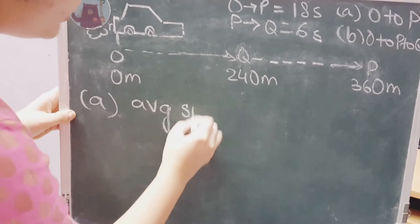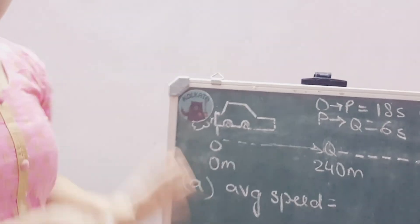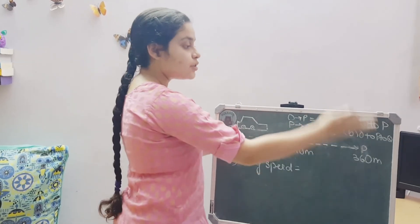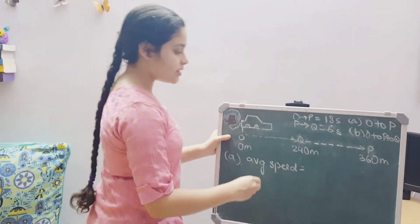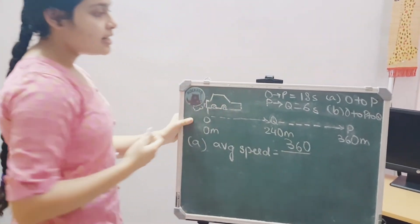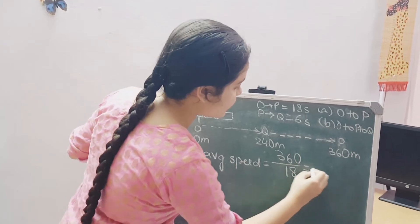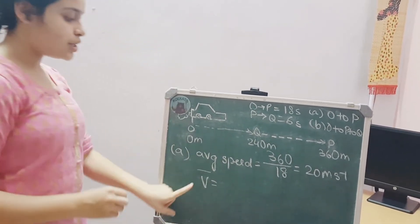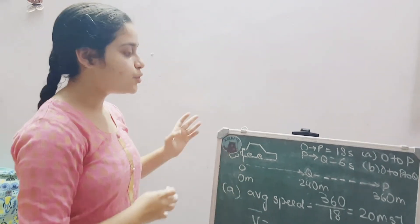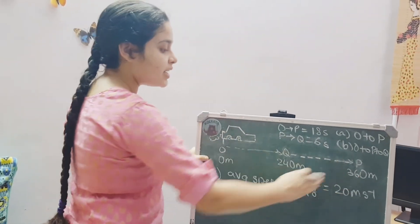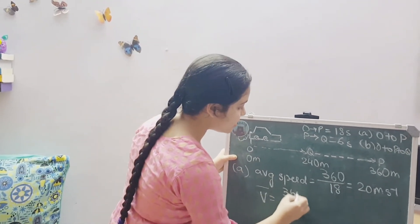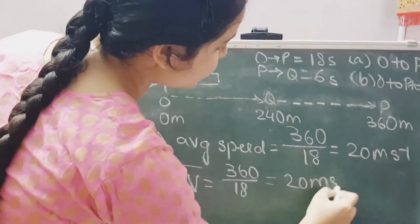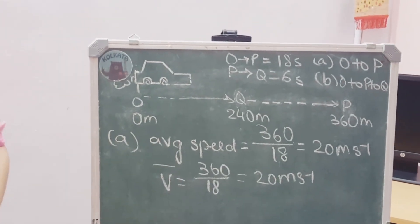I will start with the first part. So, let us first calculate the average speed. I already gave you the formula and average speed is given by the total distance travelled by the total time taken. So, from O to P, the total distance travelled is 360 meters. So, 360 and the total time taken is O to P that is 18 seconds. That means 20 meter per second. Now, we talk about average velocity which is denoted like this. It is the total displacement by the total time taken. So, from O to P, the displacement or the shortest distance is also 360 meters. So, 360 upon 18. 18 seconds is the time taken. That is again 20 meter per second. So, these are the first part solution of this question.